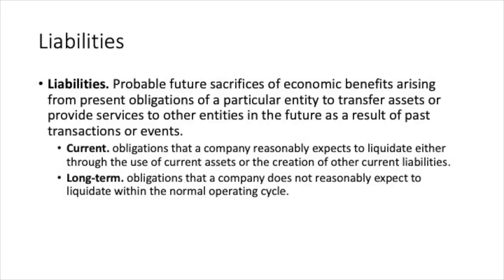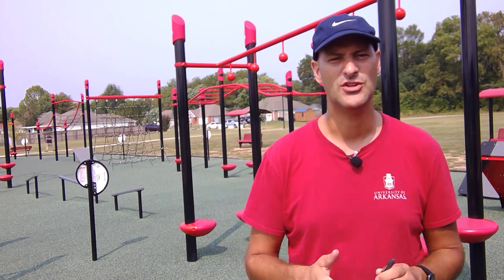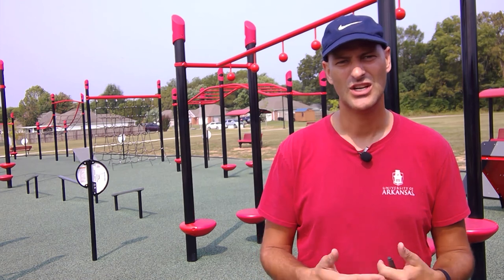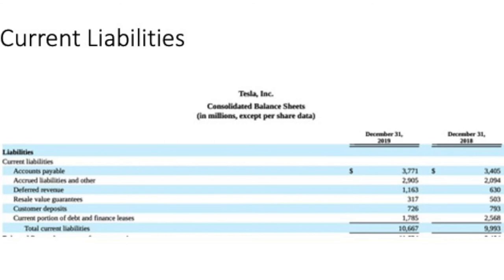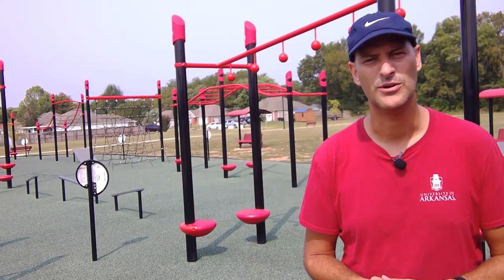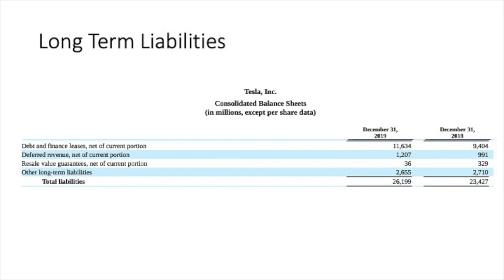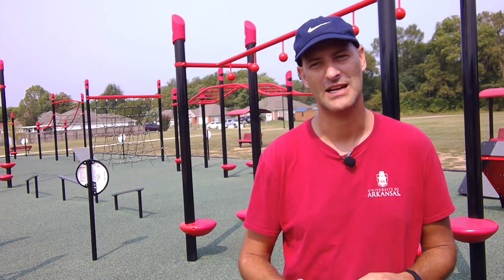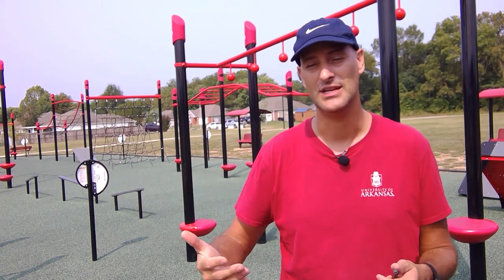Moving on to liabilities: probable future sacrifices of economic benefit arising from present obligations of a particular entity to transfer assets or provide services to other entities in the future as a result of past transactions or events. These are broken down into current and long-term liabilities. Current liabilities include accounts payable, accrued liabilities, deferred revenue, and others. Long-term liabilities are typically long-term debt or some type of other long-term deferred revenue. Tesla, for example, has resale value guarantees — a liability associated with a guaranteed future value of their cars — where they provided certain customers the ability to resell their cars to Tesla at a fixed price in the future.